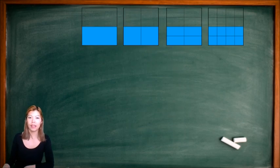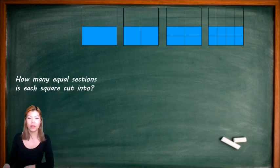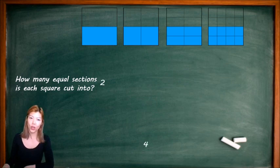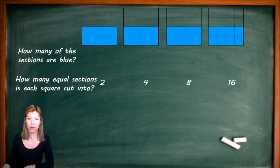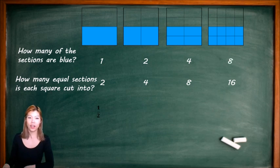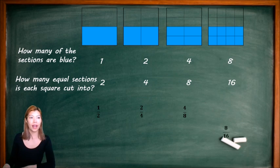Let's analyse this a little bit further. How many equal sections have I cut each of these pictures into? The first one I cut into two, the second one four, the next one eight, and the last one I've cut into 16 little pieces — they're all equal pieces. How many of them are blue? The first one's one, the second one's two, four, and eight. So I can write the fractions as a half, two over four, four over eight, or eight over 16.